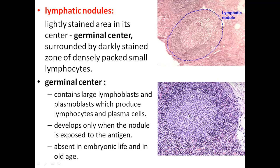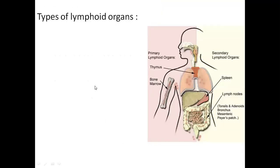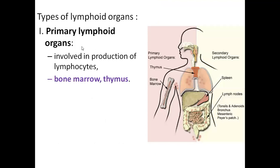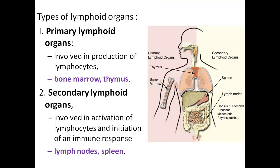Germinal centers develop only when the nodule is exposed to a particular antigen; they are absent in embryonic life and in old age. Types of lymphoid organs: primary lymphoid organs — involved in production of lymphocytes — include bone marrow and thymus. Secondary lymphoid organs — involved in activation of lymphocytes and initiation of immune response — are the pea-shaped lymph nodes and spleen.